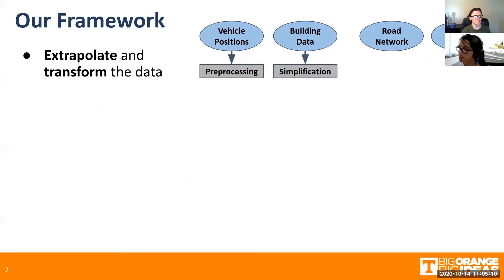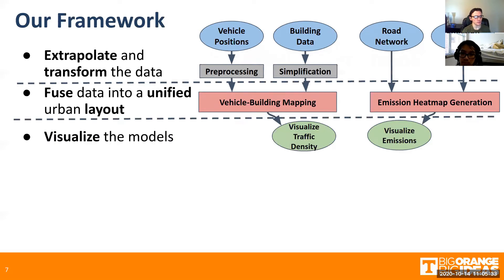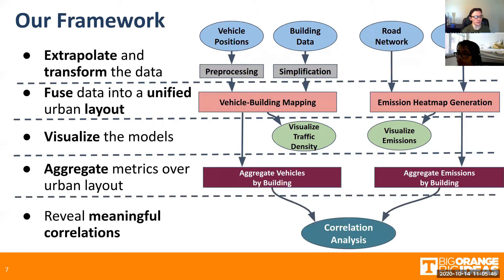Our framework is a five-stage workflow. In the first stage, we take the original data and perform a series of preprocessing and simplification steps so we can extrapolate from and transform this data. In the next level, we fuse the data into a unified urban layout with respect to traffic density and vehicle emissions. We can then visualize these models, and beneath this, we aggregate these metrics over the urban layout with respect to traffic density and vehicle emissions. Finally, in the last level, we take these two quantities and through a statistical analysis, reveal meaningful correlations between them.